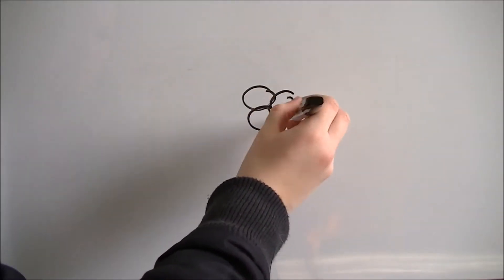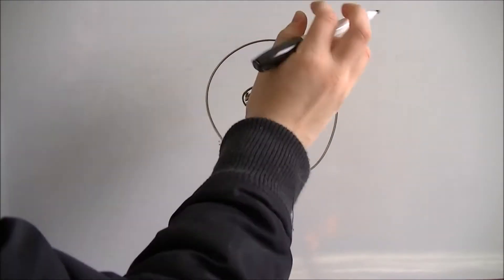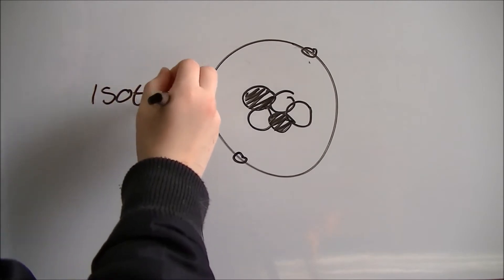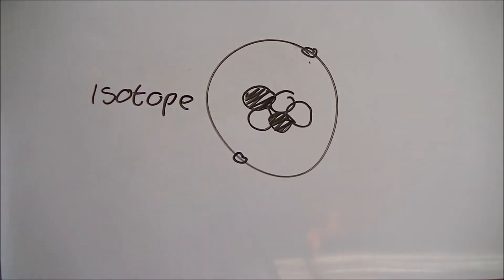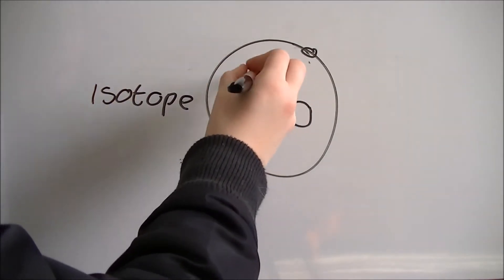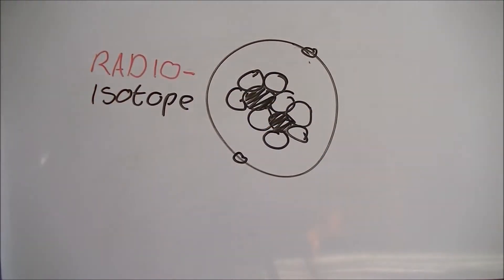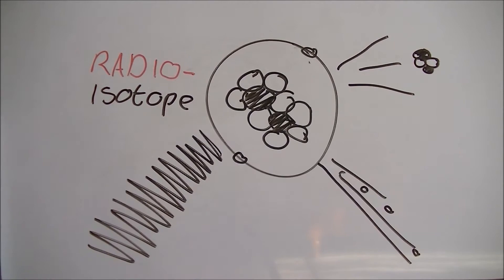But firstly, we should talk about what a radioisotope is. An isotope is when an atom has a different amount of neutrons to protons. This changes the mass of the atom. Radioisotopes are unstable nuclei that break down and emit radiation through a process called nuclear decay. This is when the nuclei, in an attempt to become stable, emits energy and particles.